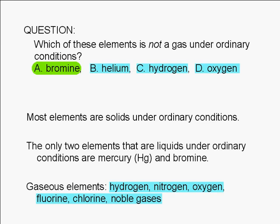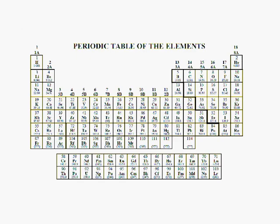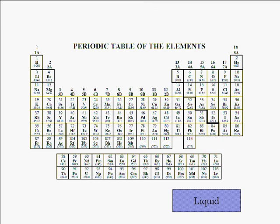It might help you remember these by referring to the periodic table. Here are the elements that are liquids under ordinary conditions: bromine and mercury.